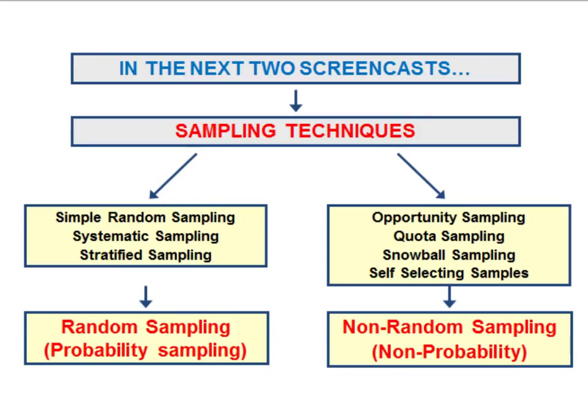Now because sociologists usually want to ensure that their sample is as representative of the target population as possible, they will normally use what we call random sampling. In random sampling, each member of the population should have the same probability of being chosen. So random sampling techniques like these are sometimes also referred to as probability sampling.